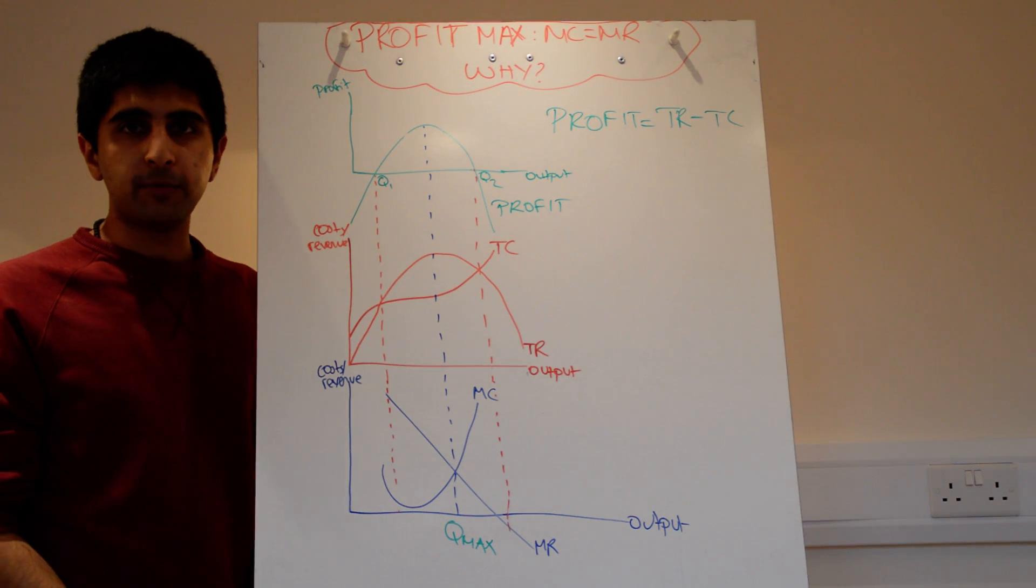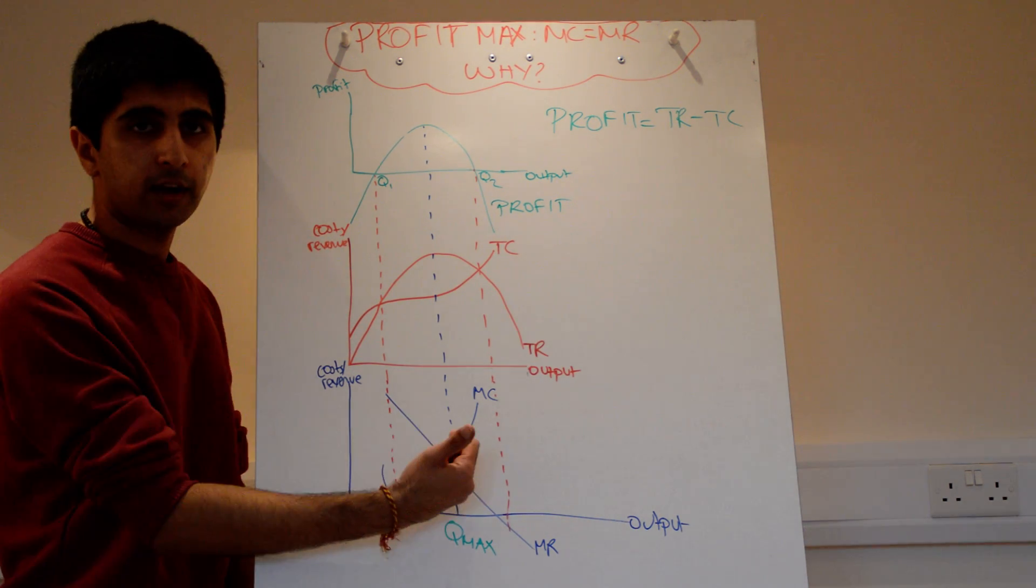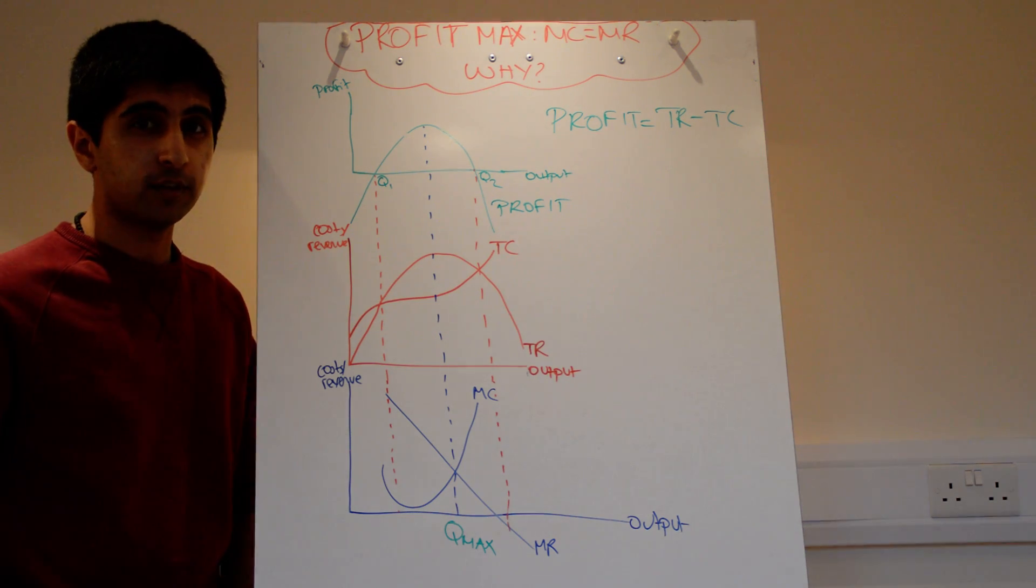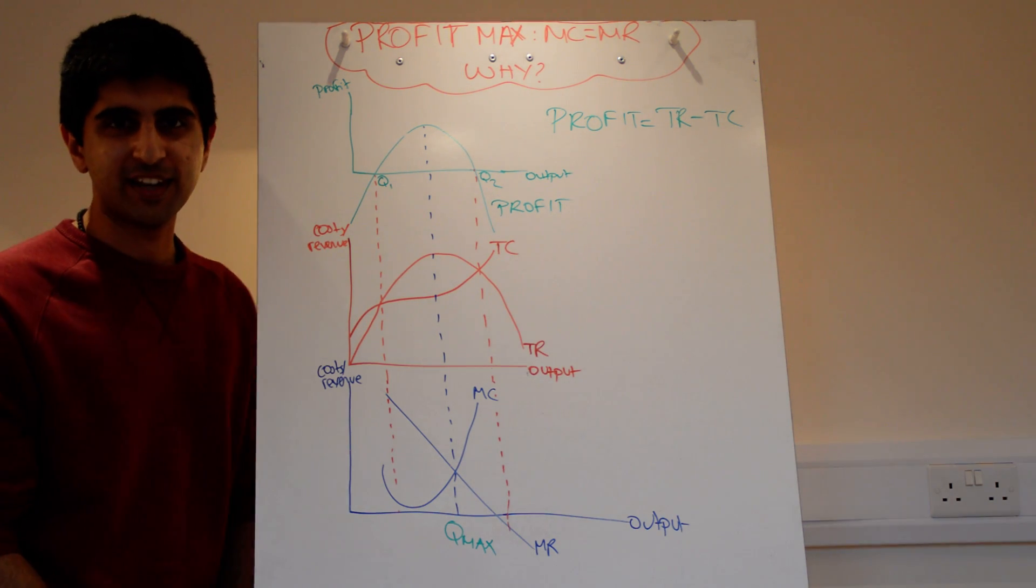So, okay, that should explain why MC equals MR. Logically, go either side and you'll work out that none of those points either side can maximize profits for the reasons I've just said. Hope that makes sense. See you next time.